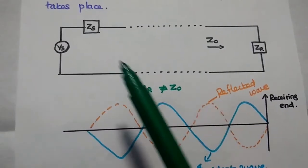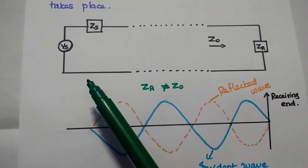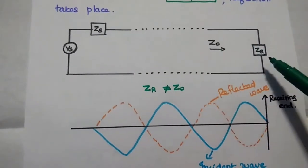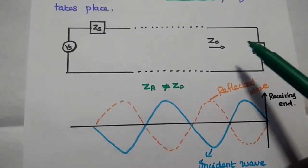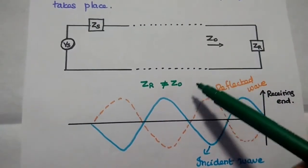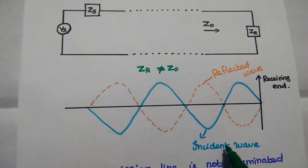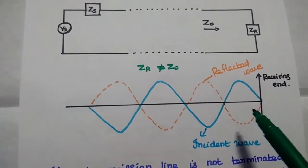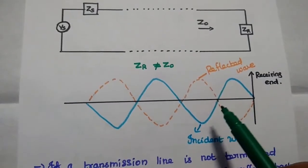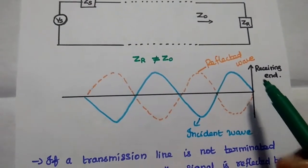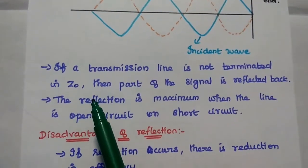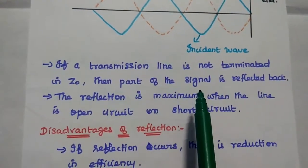This is the general diagram of the transmission line with the source VES, that is the sending end voltage. Here ZS is the input impedance of the transmission line, ZR is the receiving end impedance, and Z naught is the characteristics impedance. If ZR is not equal to Z naught, then the incident wave at the receiving end will be reflected back. We can draw the reflected wave from the receiving end, because the reflection takes place at the receiving end. If a transmission line is not terminated in characteristics impedance Z naught, then part of the signal is reflected back.